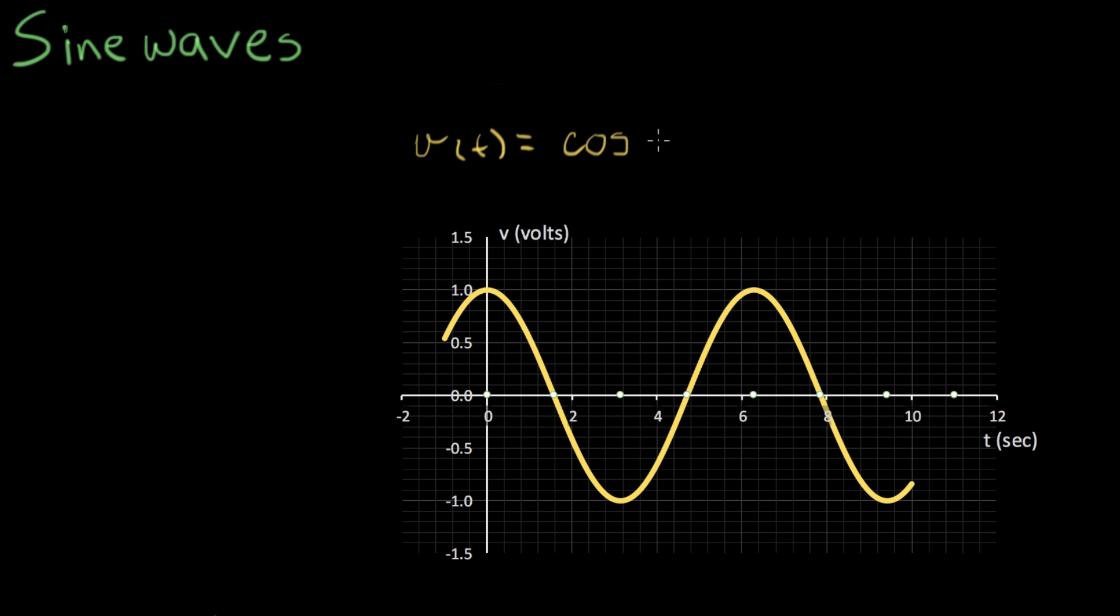Cosine of omega t. So here what we're doing is we're introducing time as the argument to a cosine. And we have another variable in here called omega. This is the Greek lowercase omega.